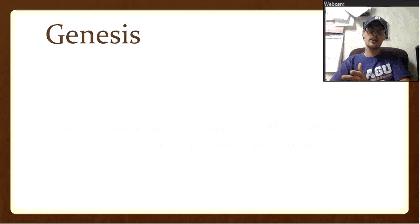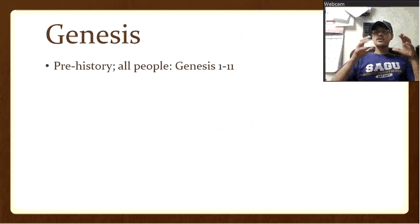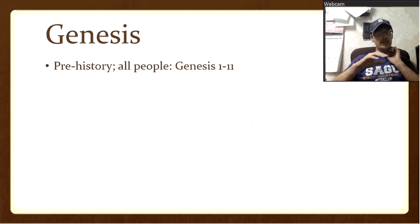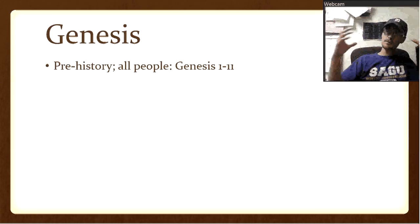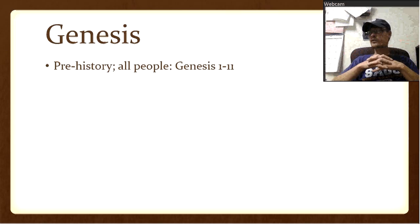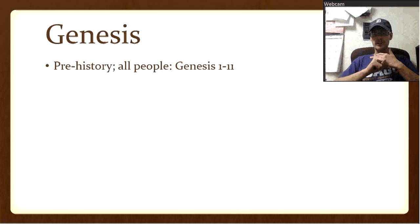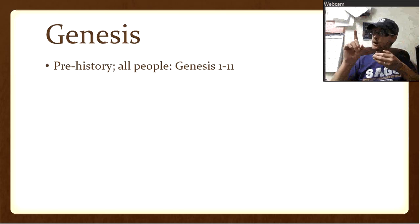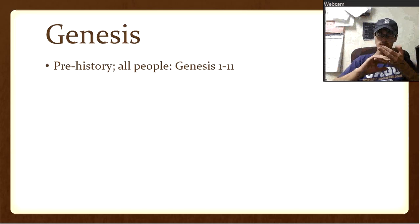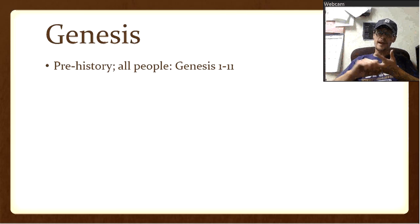Genesis has 50 chapters, but the first 11 are very unlike the last 39. The first 11 deal with all people and with prehistory — events we can't easily compare with other events because they were before recorded history. We have Adam and Eve in the Garden of Eden, they sin and are kicked out, but they're spared — God spared them even though it called for death. Then people spread throughout the world, there's a flood, and the Tower of Babel.